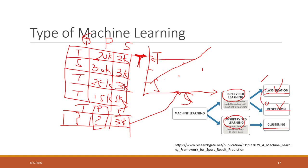For both types of supervised machine learning models, we do know the right answers. Based on those right answers, we try to find the model that best fits the mathematical relationship in the data, and then we can use that for predictions.